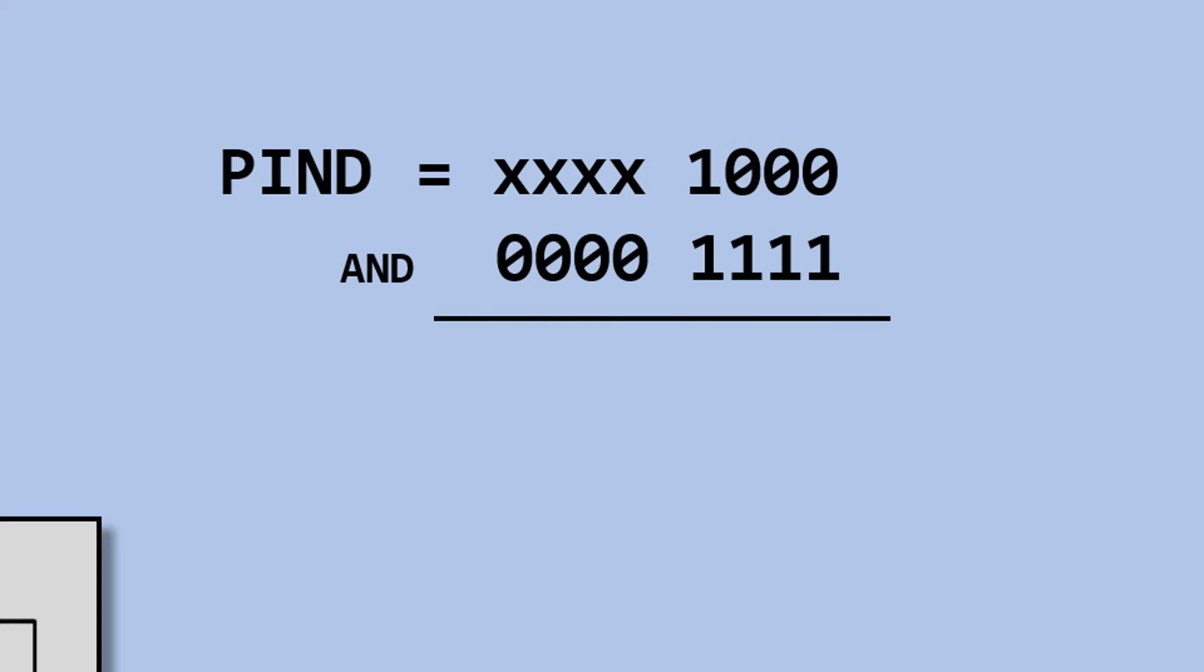Perform an AND operation with the content in PIN D register. This is the result. The purpose is to clear these unknown bits to 0.